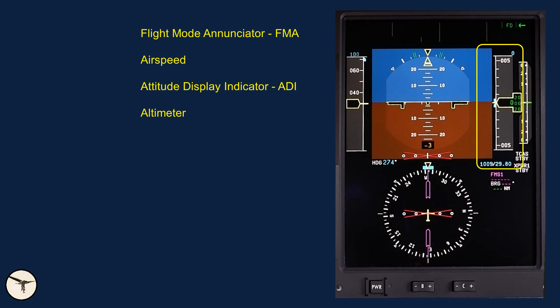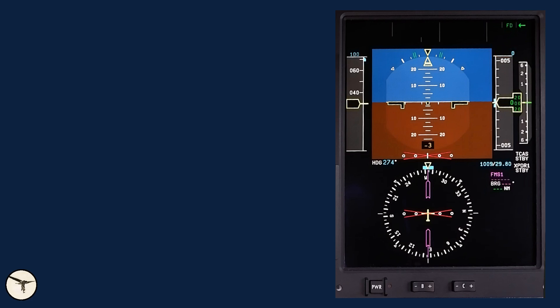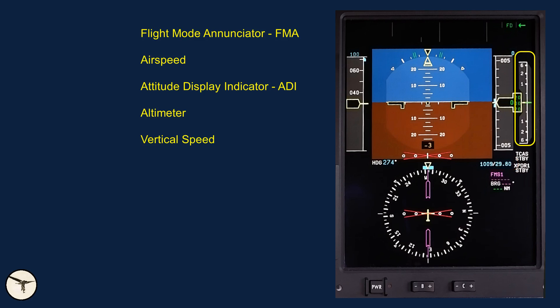This is the altimeter. The number on top of the indicator is the target altitude. When the aircraft is powered up, the default value is zero feet. At power-up, the pressure reference window shows the setting from when the aircraft was shut down. The vertical speed indicator has a green needle; current vertical speed is shown above, unless the aircraft is maintaining altitude. Below are the annunciators for the transponder and TCAS.